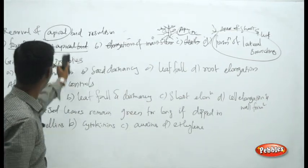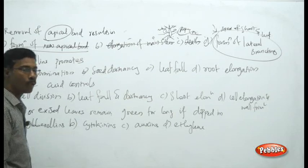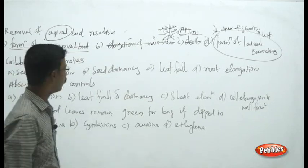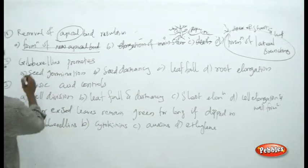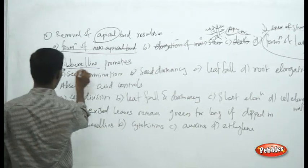The answer for the first question is formation of lateral branching — that is the result of removal of the apical bud. Now see the next question.